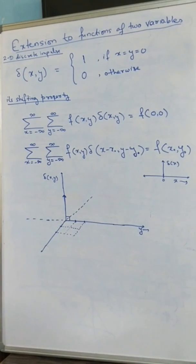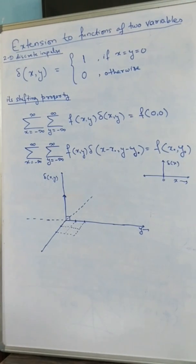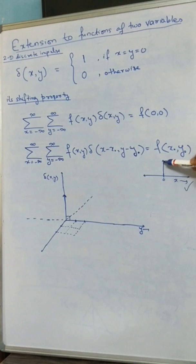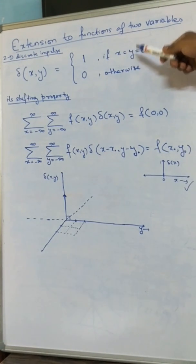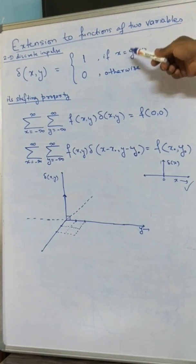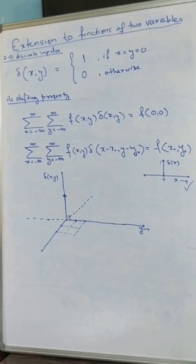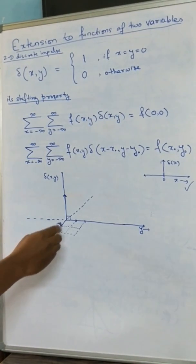So our digital images are functions of two discrete spatial coordinate variables, x and y. Let us say that the 2D discrete impulse is represented by δ(x, y), which equals 1 when both x and y are equal to 0, and δ(x, y) equals 0 for any other value of x and y. The 1D impulse equals 1 when x equals 0 and 0 anywhere else. Similarly, the 2D discrete impulse equals 1 only when both x and y equal 0.